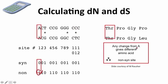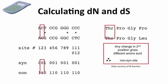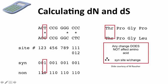As mentioned before, all second positions are non-synonymous sites — any second position change will change the amino acid. The third position in this case is a synonymous site, because if you're starting with AC, any change at the third position will not affect the amino acid. So that is a clear synonymous site.